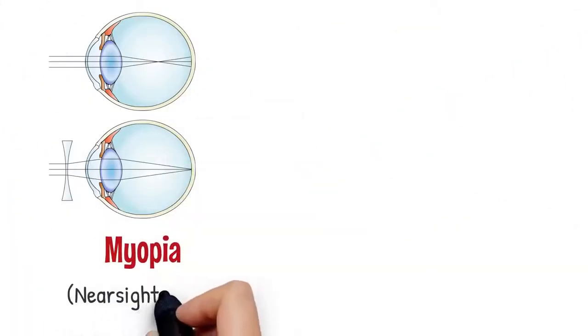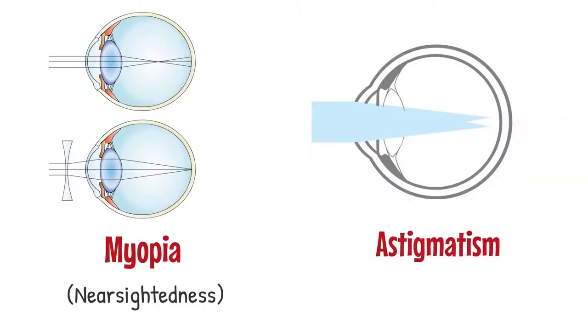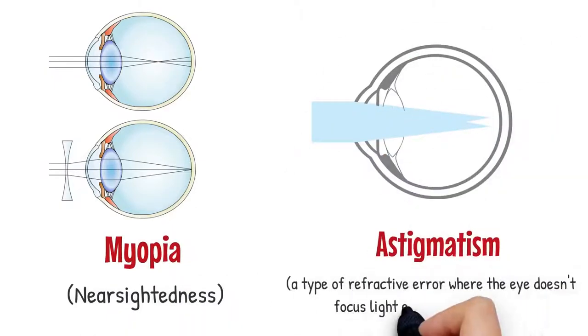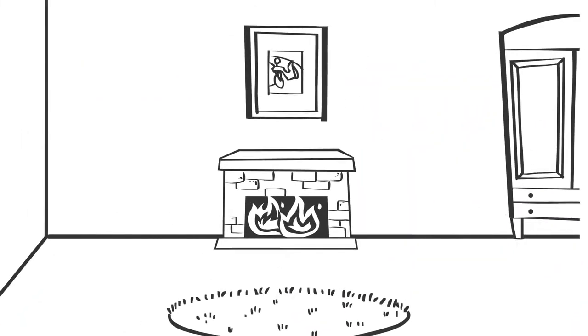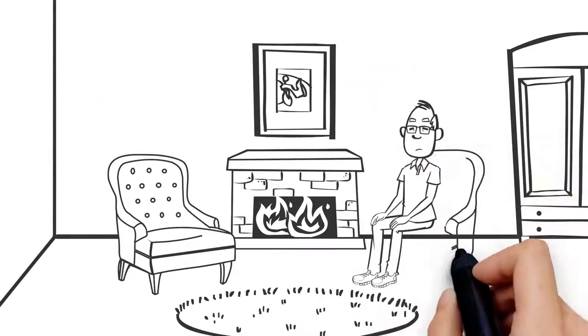Unlike other conditions such as myopia, nearsightedness, or astigmatism, a type of refractive error where the eye doesn't focus light evenly on the retina, presbyopia naturally comes with age and can affect anyone.